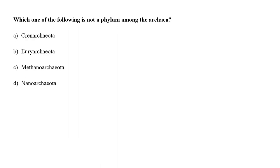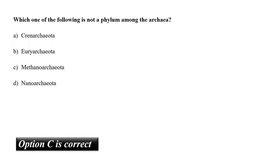Which one of the following is not a phylum among the archaea? A. Crenarchaeota, B. Euryarchaeota, C. Methanoarchaeota, or D. Nanoarchaeota? There are five phyla among archaea: Crenarchaeota, Euryarchaeota, Korarchaeota, Nanoarchaeota, and Thaumarchaeota. Methanoarchaeota is not a phylum among archaea. So the correct answer is option C.